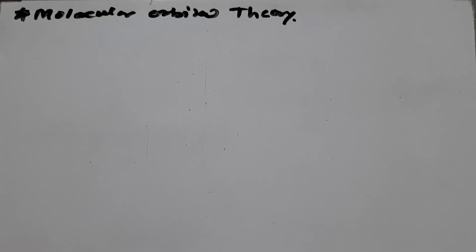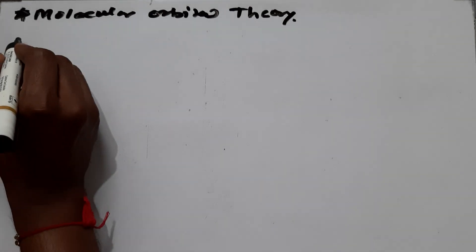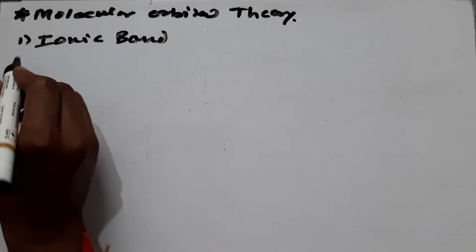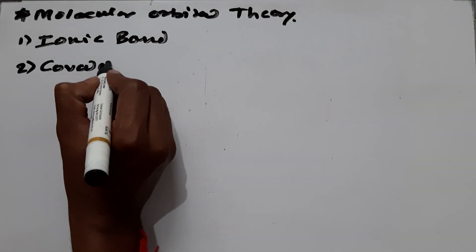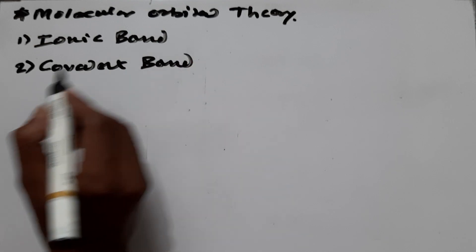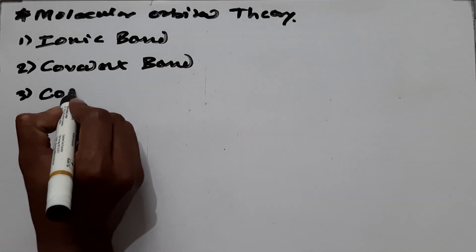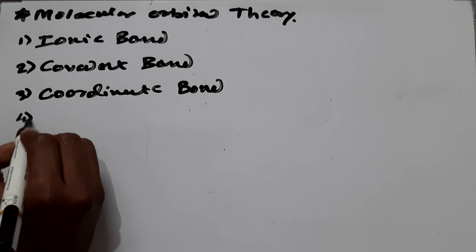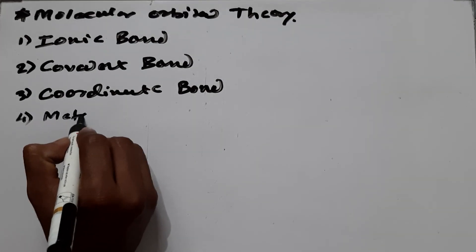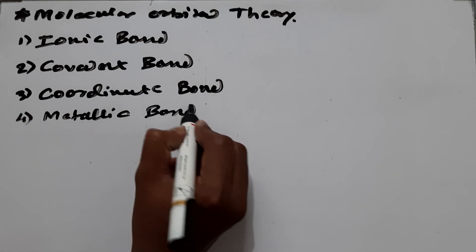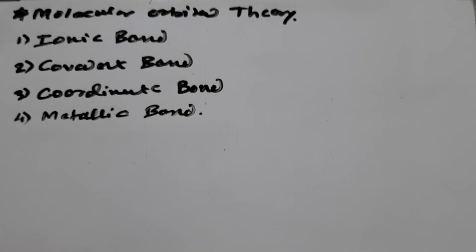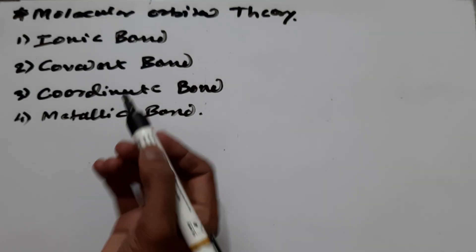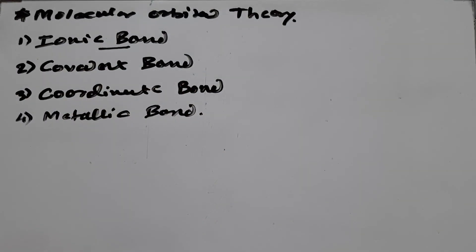First, we talk about the types of bonds. It is a very simple concept that you all already know about, but we just have to remember it. The first type is the ionic bond, the second is the covalent bond, the third is the coordinate bond, and the fourth is the metallic bond. We will discuss them one by one, starting with the ionic bond.